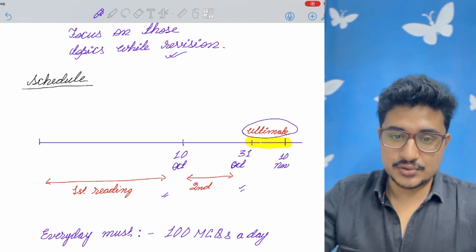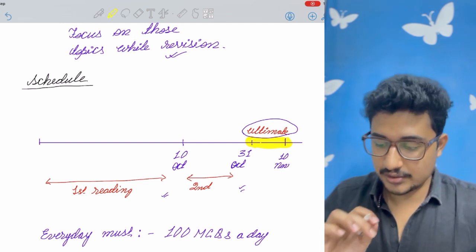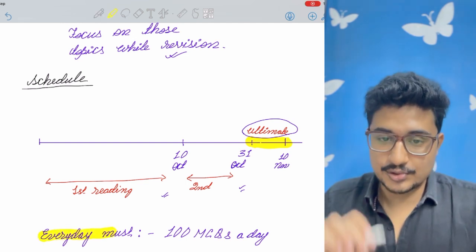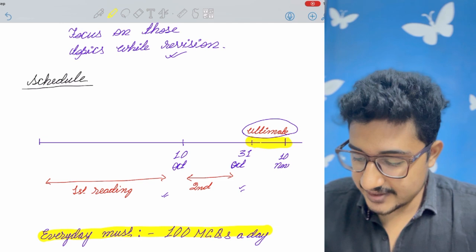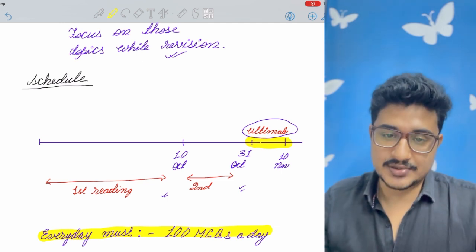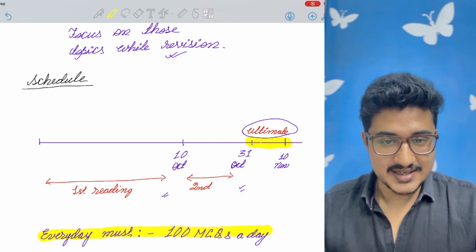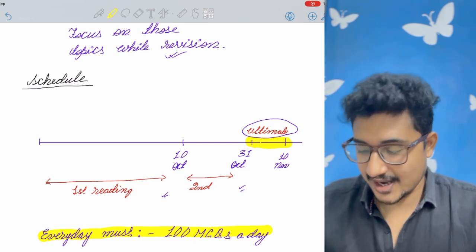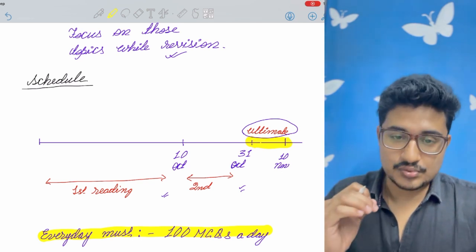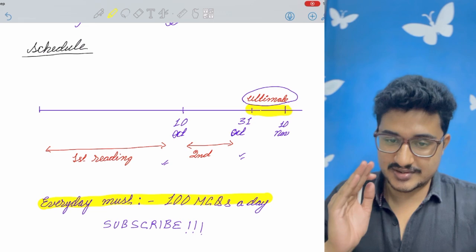And I am giving you a target and a homework. That every day you should solve 100 MCQs a day. 100 MCQs a day makes you smarter every day and makes you go one step towards your rank.